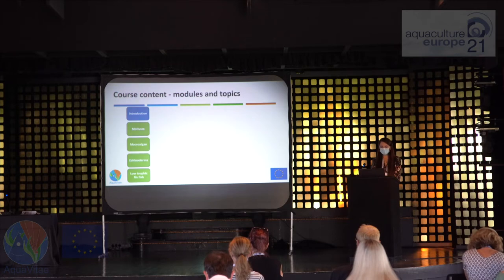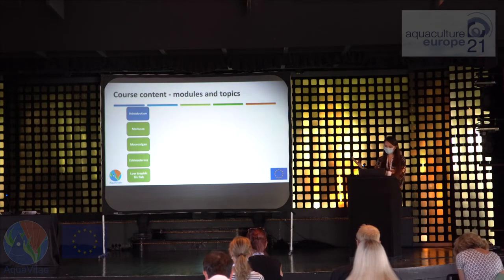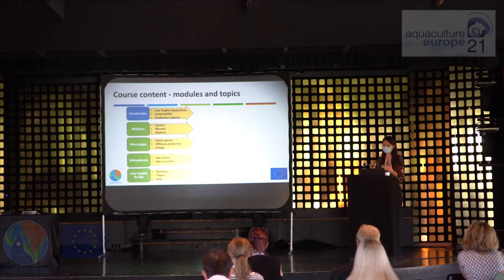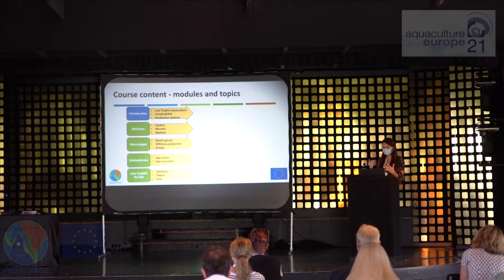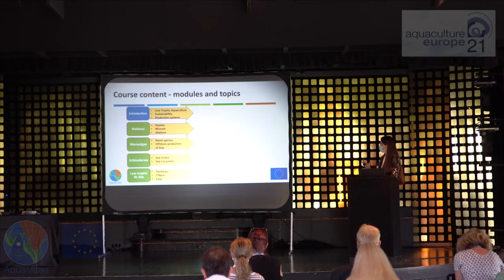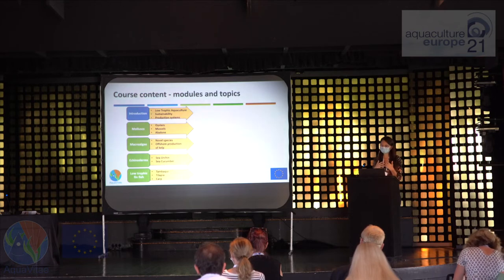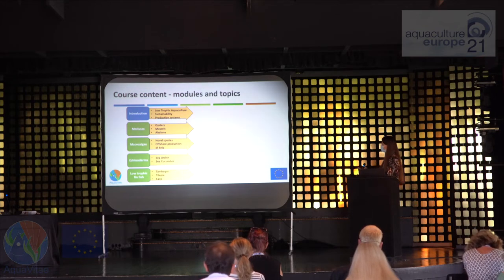Within the course we have ten different modules. In the first five, students will learn about what is low-trophic aquaculture, what is sustainability, and how those topics connect. We then go into four different groups of species. We have chosen these species because we are actually working with most of them within the AquaVita project, so the expert knowledge is readily available to us.